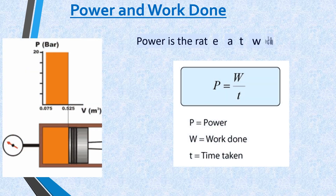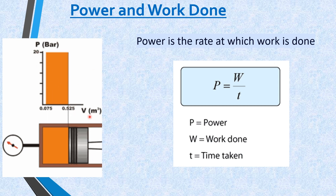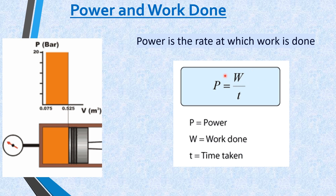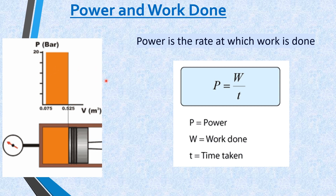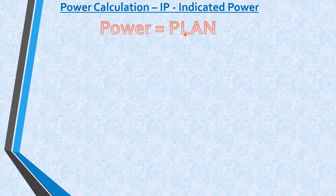Power is the rate at which work is done. If you draw a curve between pressure and volume in a particular cylinder and consider the average pressure, the area under this curve represents the work done. Dividing that work by time gives you the power. The PLAN equation: P is pressure (MIP or MEP depending on which power you are calculating), L is the stroke length, A is the piston area, and N is the number of power strokes per second.